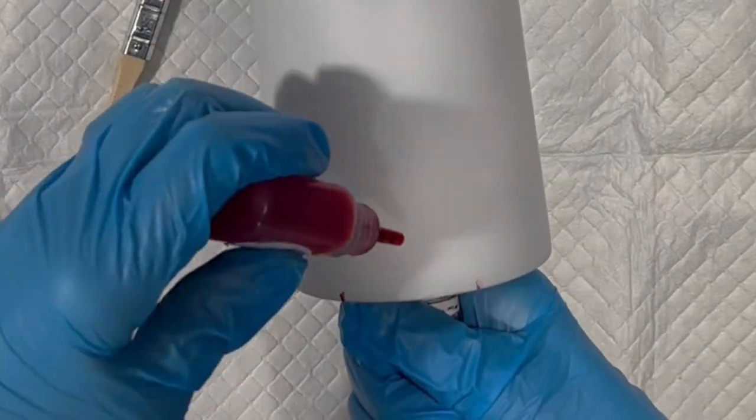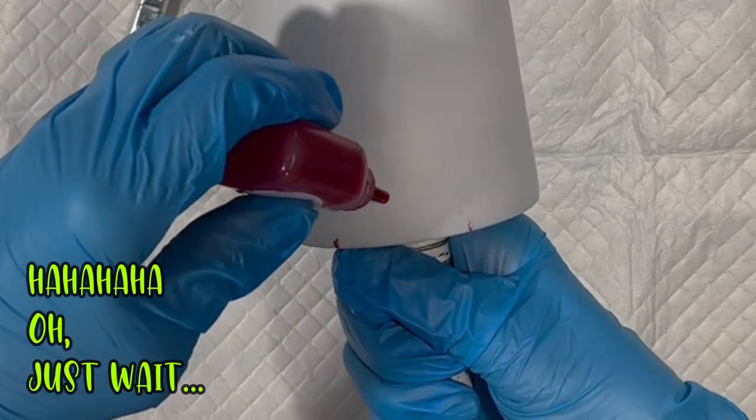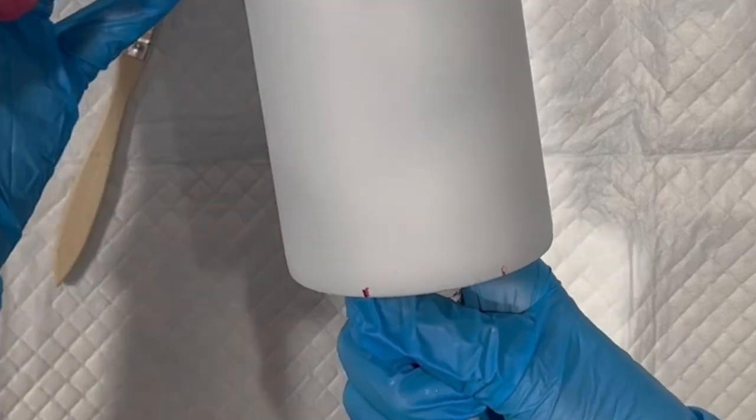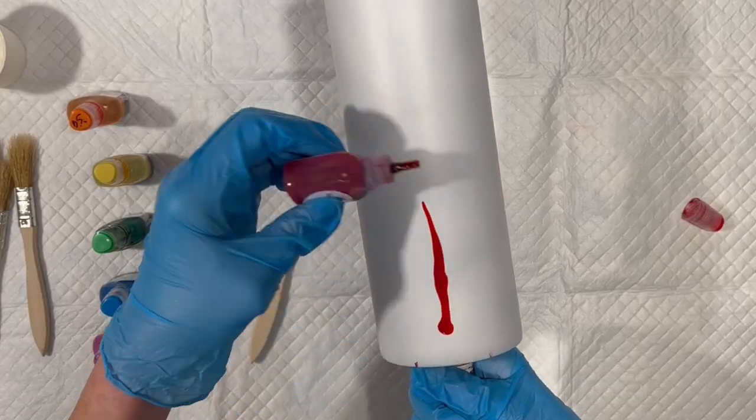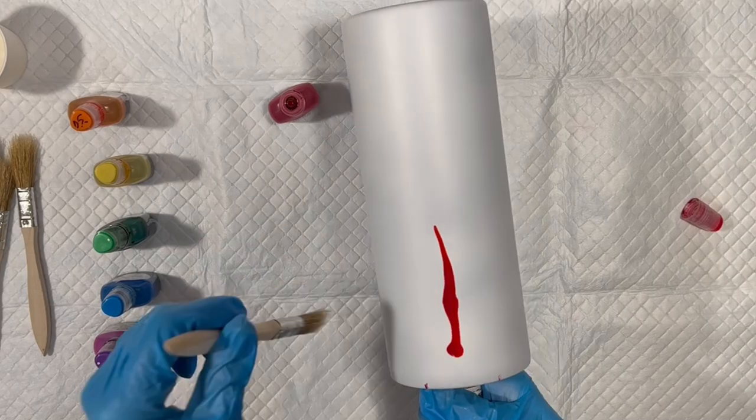I'm going to start with red here. I'm going to try to not let it drip, but as you know, we're putting a liquid on a round object, so we'll see how that goes.